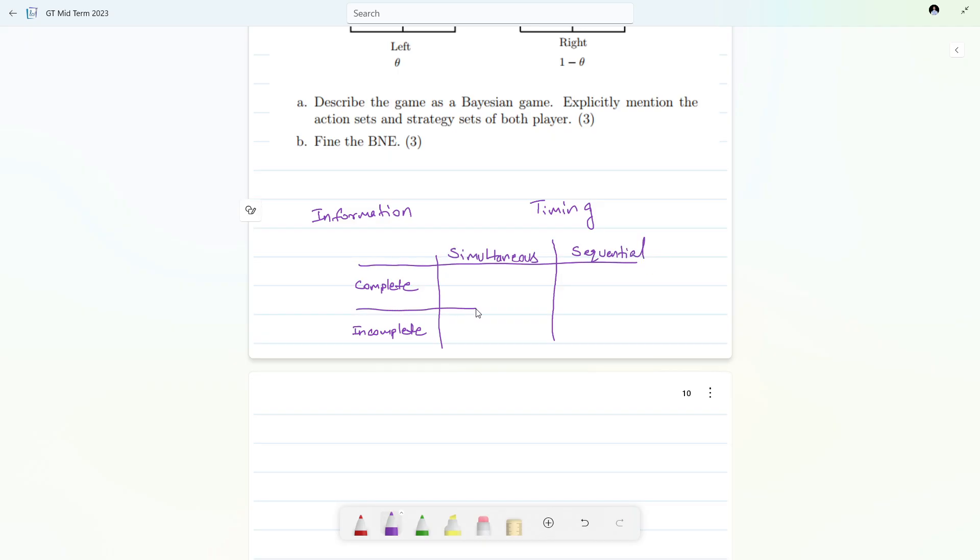If we are given complete information game and if we have simultaneous move game, then we use Nash equilibrium concept. If it is sequential with complete information, then we use subgame perfect Nash equilibrium, SPNE or SPE. If we have incomplete information game, then we use Bayesian games, the one which we are going to solve right now.